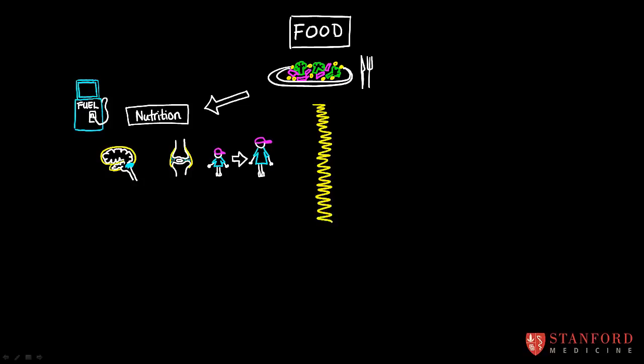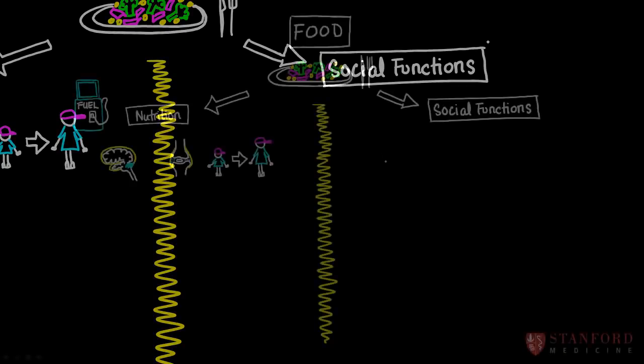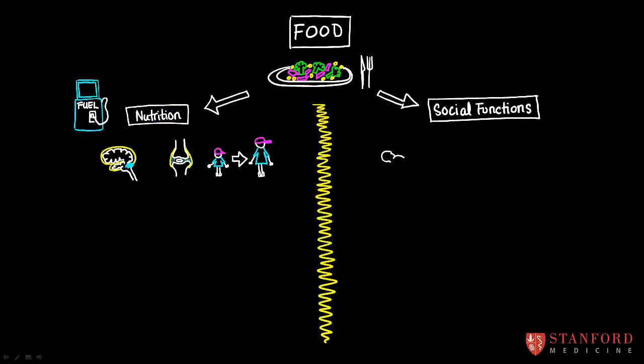But on the other side, we have the social functions of food. From the smallest families, from the first day of life and up to the most kind of extended social networks, food is a way of communicating. It's a way of showing care for one another, a way of celebrating together. It's also a way of passing on our family's history and our traditions. And all of these things fall under the side of the equation that I would call the social functions of food.